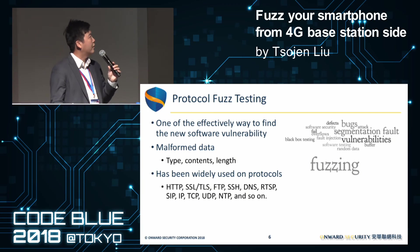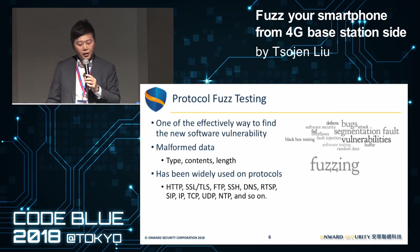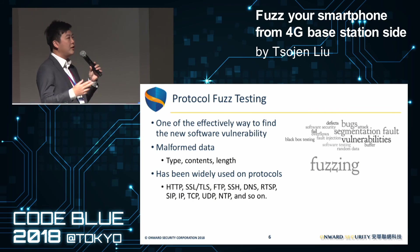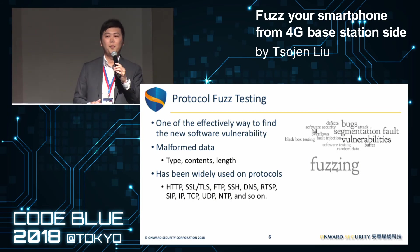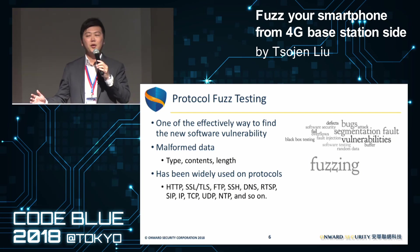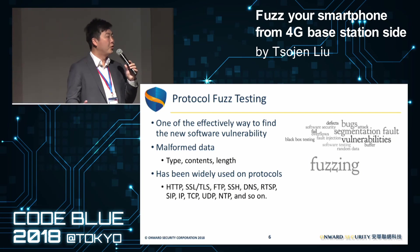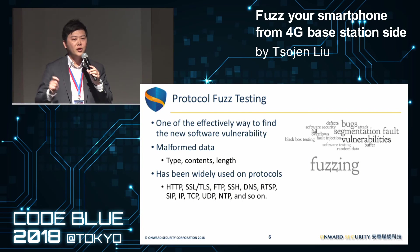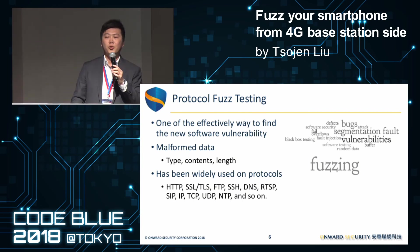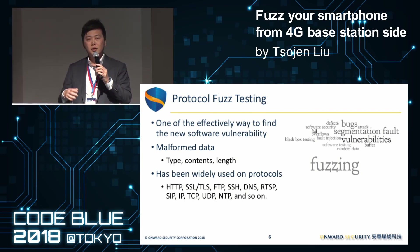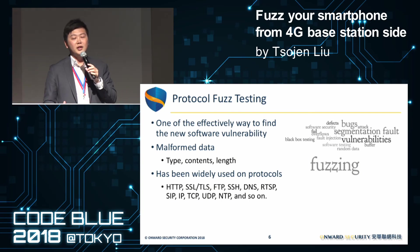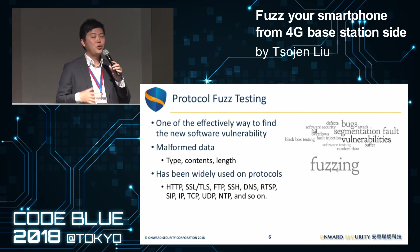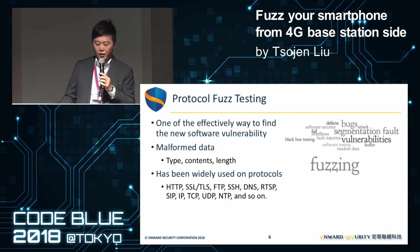What is fuzzing testing? Simply speaking, you just send something wrong — something malformed — like a very long string, a very big value, or something malformed to a target, and you monitor the target's response. If there is no response from the target, it may indicate a vulnerability exists, so you can do more analysis to confirm whether the target is actually vulnerable.